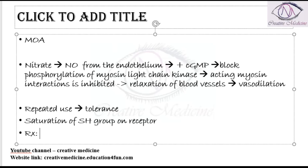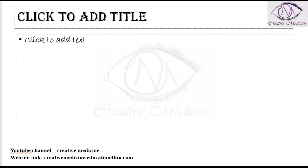Whenever the patient develops tolerance, the main treatment is to give a nitrate-free interval regime. In this regime, the drug is given every 6 hours, and at night a 12-hour interval should be given. You can give the drug in the morning, afternoon, and evening, but the whole night you should not give nitrates. There should be a 12-hour nitrate-free period before giving the next dose, so that tolerance will not occur.